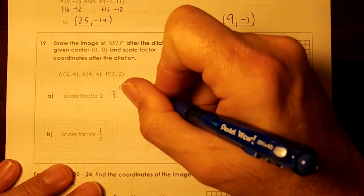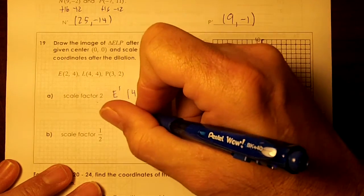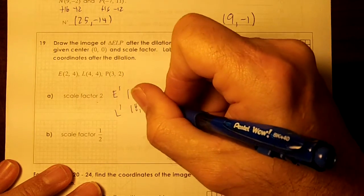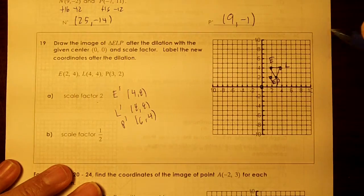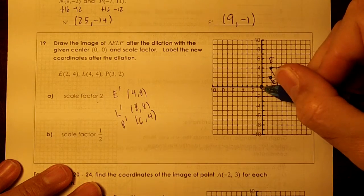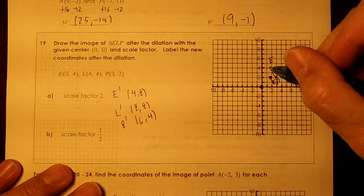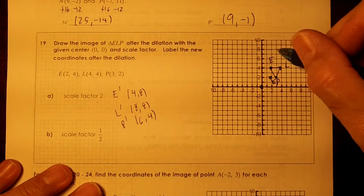So E prime is going to be 4,8. L prime is going to be 8,8. And P prime is going to be 6,4. Now then, what happens if you go over here to get from here to here? You go up 4 over 2. You're going to go up 4 over 2 again.